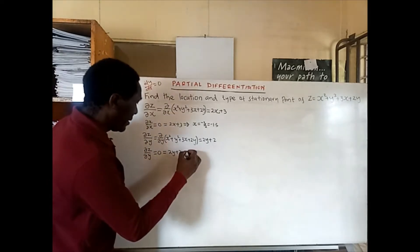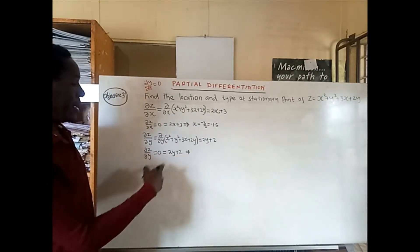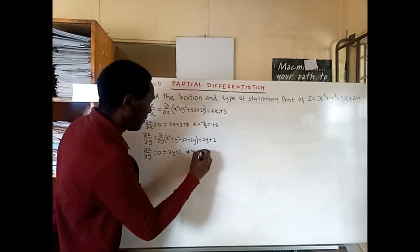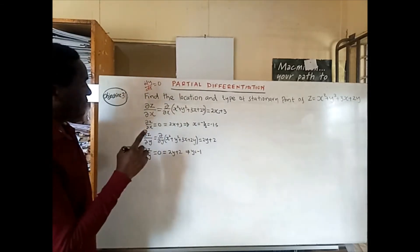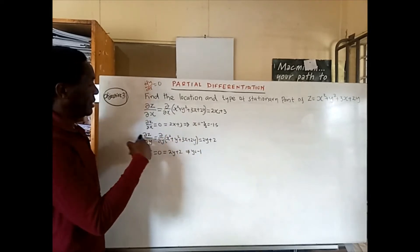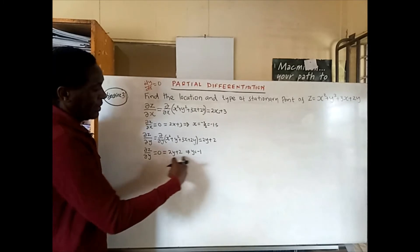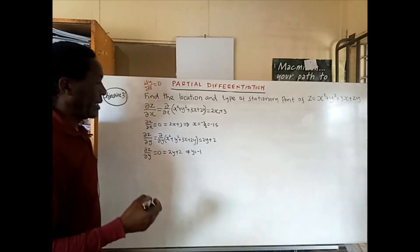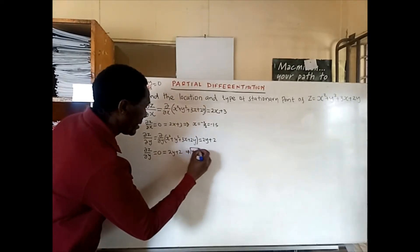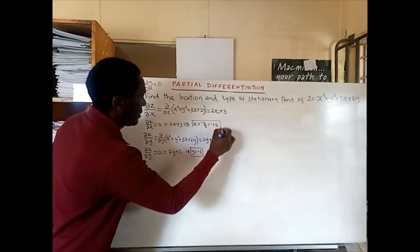Since we have a single equation in one unknown, we can make y the subject and find that y equals negative 1. Going back to 2x plus 3 equals zero gives x equals negative 3 over 2. So the turning point has x equal to negative 3 over 2 and y equal to negative 1.